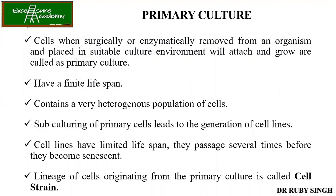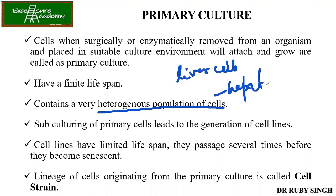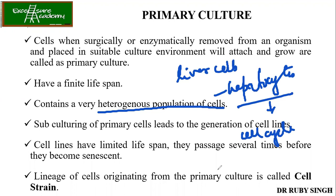Primary cultures contain a very heterogeneous population of cells — meaning different kinds of cells will be there. Even if I take liver cells (hepatocytes) from one organism, after repetitive cell cycle divisions the cells start differing. The surface proteins on the cells start differing, so within the same hepatocyte culture you will have different kinds of hepatocyte cells. Subculturing primary cells leads to generation of cell lines — taking a small amount and culturing into new media, giving you separate cell lines.